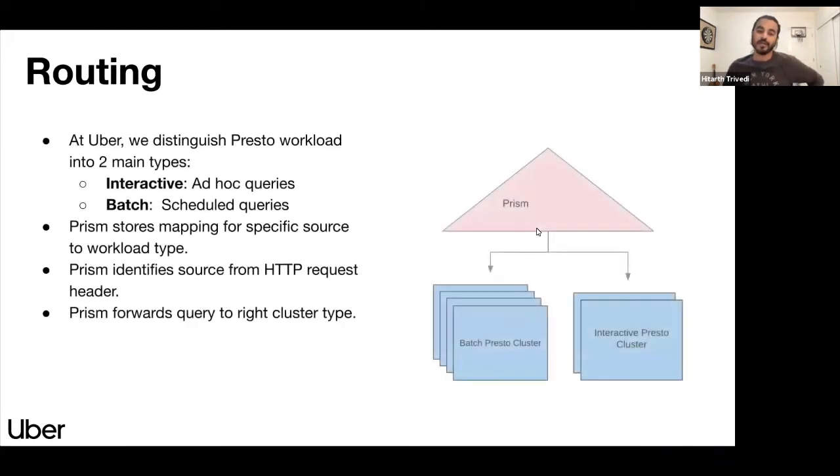Now let's talk about routing. As I had mentioned earlier, there are two main types of workload: interactive and batch. Prism maintains a source map which it uses to identify which queries from a particular source should go to a specific type of cluster. So this source is available via HTTP request header to Prism and using its source map, it will choose the right Presto cluster.